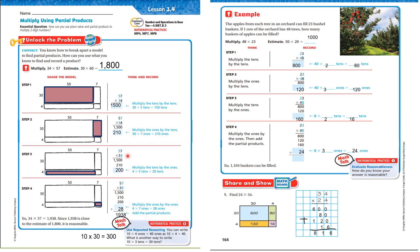Now moving to the ones column. 4 ones times 5 tens is 200. 4 ones times 7 ones is 28. When we add all of that up, we get 1,938. Since 1,938 is close to the estimate of 1,800, it is reasonable. So we multiplied tens by tens, tens by ones, ones by tens, ones by ones — then added them all up to get the answer.